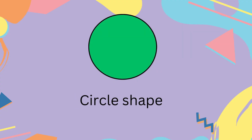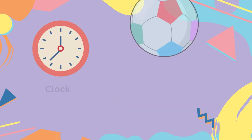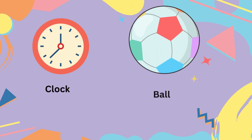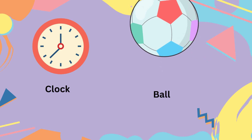It is a circle shape. Examples of a circle shape are a clock and a ball.